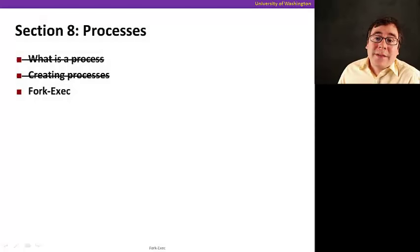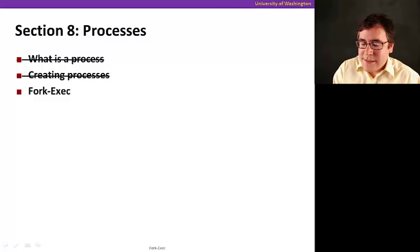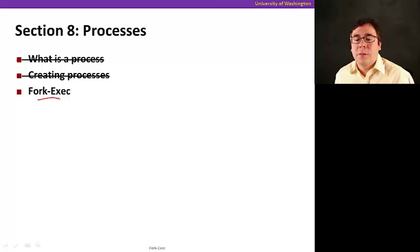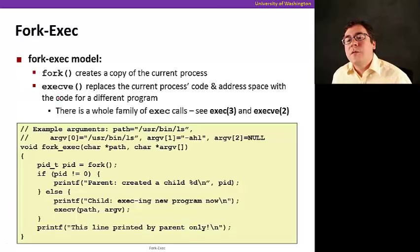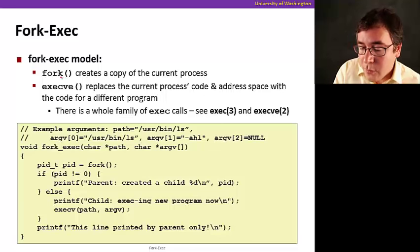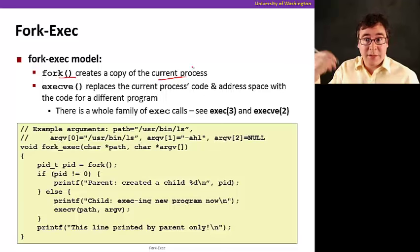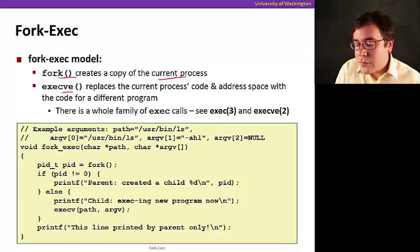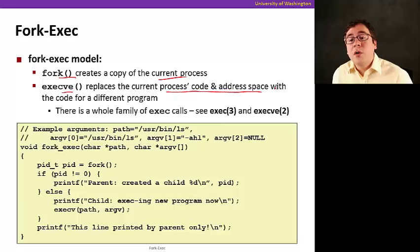Now that we know what a process is and how to create processes, let's see how we do interesting things with processes. We're going to be talking about this fork-exec model. And as we saw before, fork creates a copy of the current process, the process that's called fork. And execv is going to replace the current process code and address space with the code for a different program.